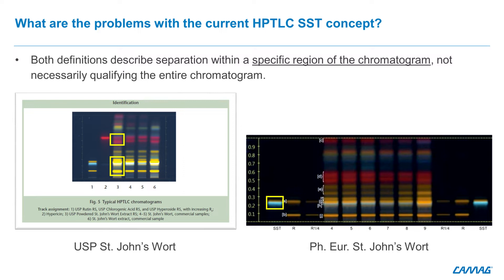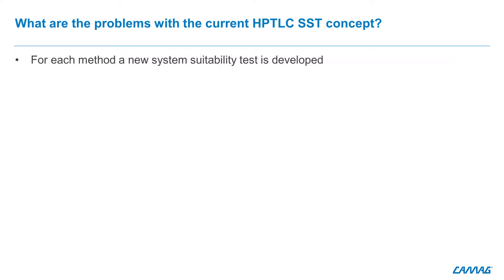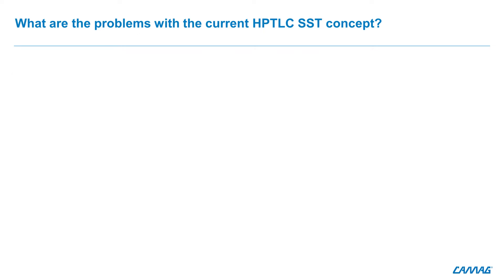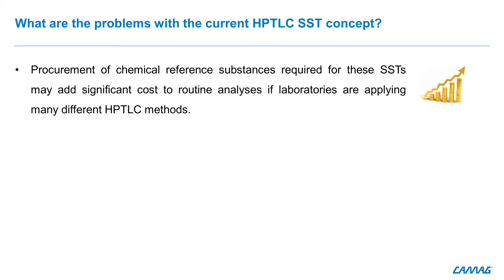When we look at both definitions, they both describe separation within a specific region of the chromatogram — here for the USP, and here for the European Pharmacopoeia. Another problem is that for each method, a new system suitability test is developed, with different acceptance criteria for different monographs. So if laboratories are applying many different HPTLC methods, the procurement of chemical reference substances required for the SST may add significant cost to routine analyses.